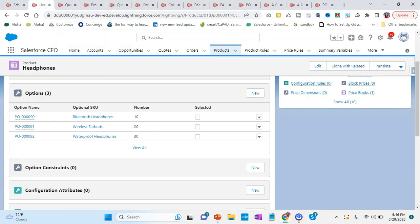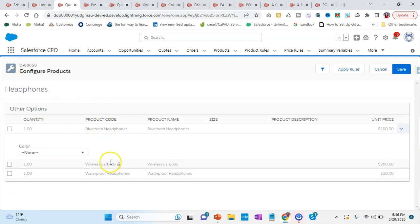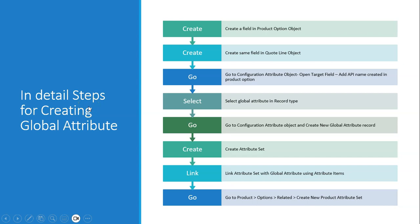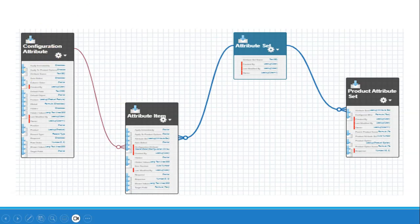Once you click save, when you select headphones you will see the color drawer for Bluetooth headphones, but not for wireless earbuds or waterproof headphones — because for those two you have not created the product attribute set. You need to create the product attribute set to link them. So going back to recap the steps: create the configuration attribute, create the attribute set, link them using attribute items. Then go to a particular product option, go to Related, create a product attribute set, provide the product option and set name details, and it will be created.